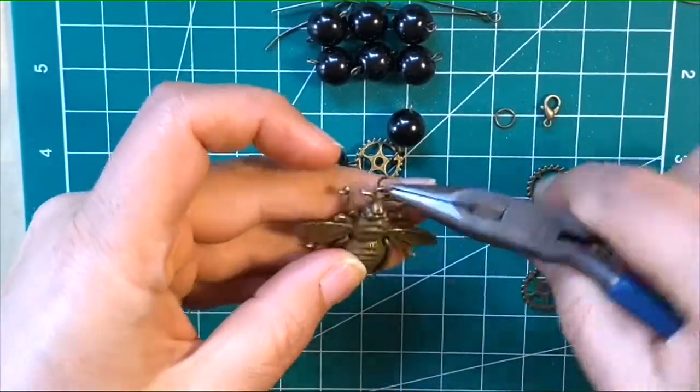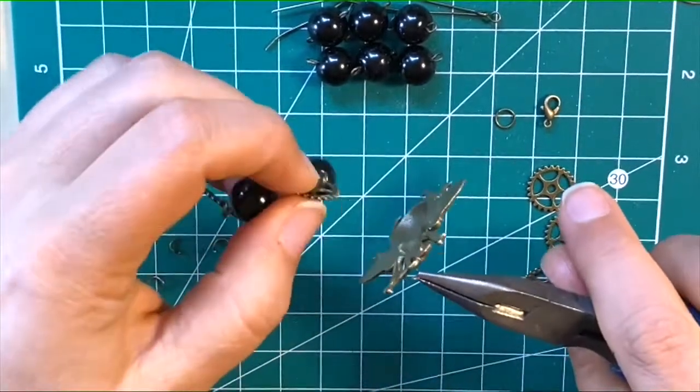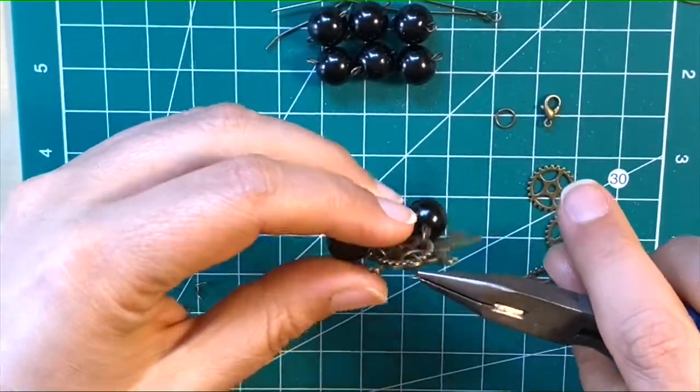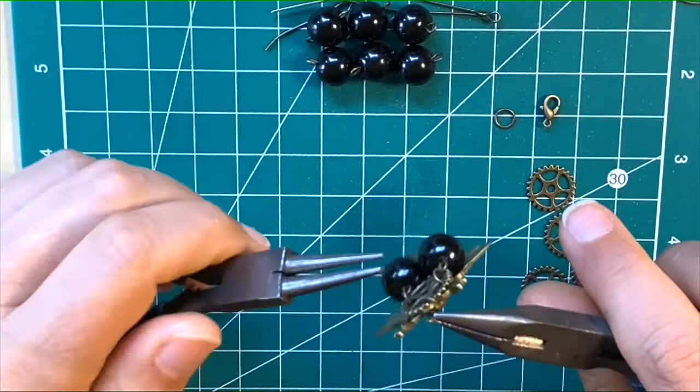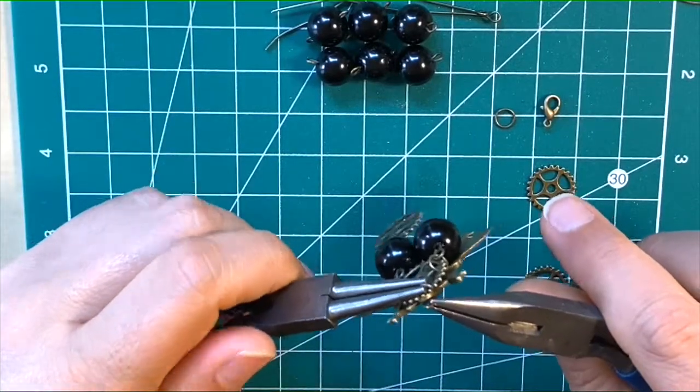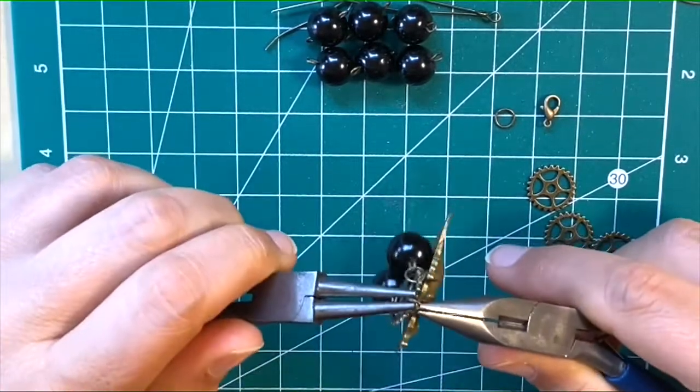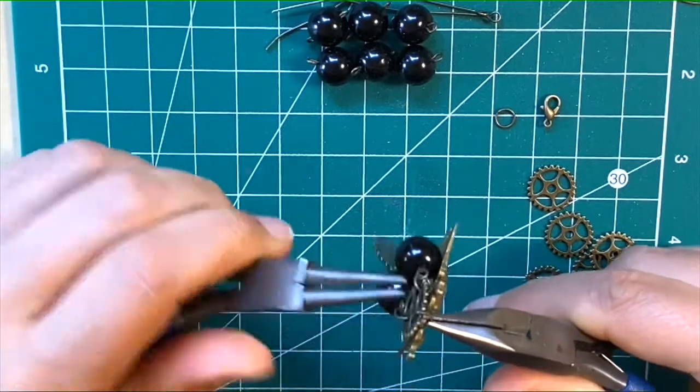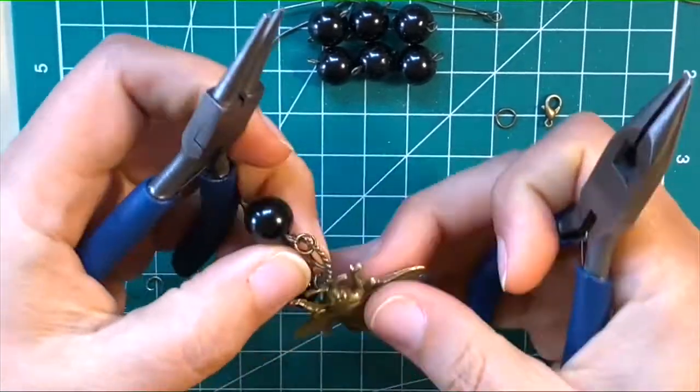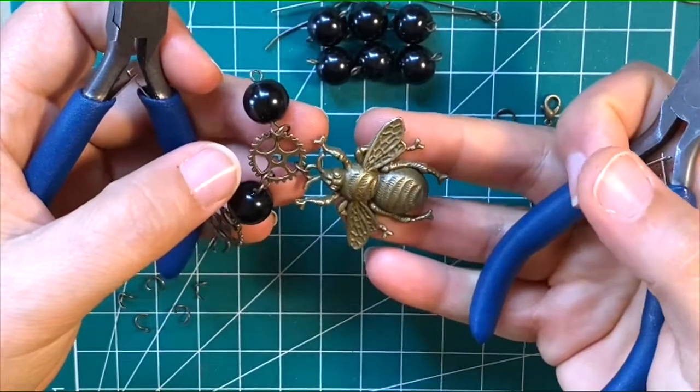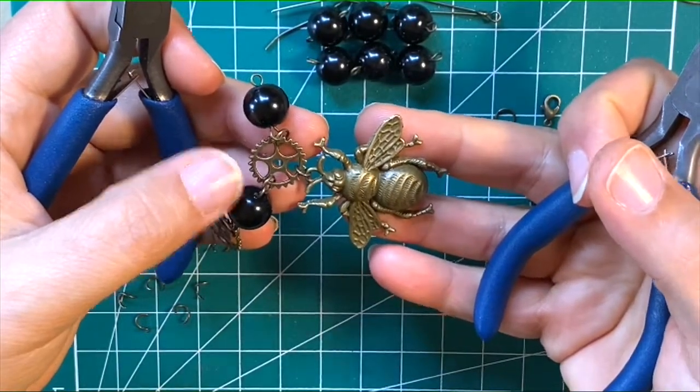I'm going to quickly grab the bee with my jump ring, put it on my cog at this point, and exactly the same, close up that jump ring. That would be the point where I would have the pendant at the bottom of my necklace.